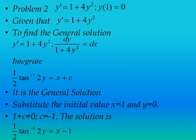The second problem is y' = 1 + 4y², with initial value y(1) = 0. The given ordinary differential equation is y' = 1 + 4y². Separating the variables gives dy/(1 + 4y²) = dx. Integrating — this is a standard integral — gives (1/2)·tan⁻¹(2y) = x + c. This is the general solution.